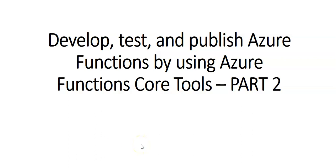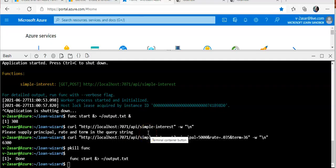Hi, my name is Ashish and this is part two of 'Develop, Test and Publish Azure Functions using Azure Functions Core Tools.' I'm logged on to the portal and this is where we left off. Now that we have built and tested the simple interest function, we would like to get it published to Azure, so it would be great to see it up and running on the web and provide the URL to our colleagues.